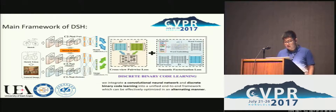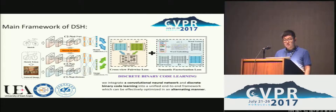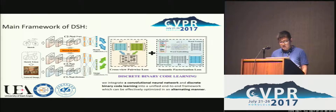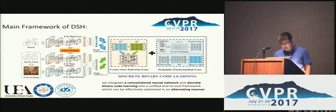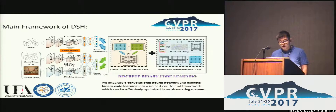To address the above issues, we present deep sketch hashing for sketch-based image retrieval. We are the first hashing work specifically designed for category-level SBIR. We propose to adopt auxiliary image representations called sketch tokens as a bridge to mitigate the geometric distortion between sketches and natural images. Based on sketch tokens, we propose a novel semi-heterogeneous deep framework for binary code learning, where three networks are developed as hash functions to encode freehand sketches, natural images, and auxiliary sketch tokens.